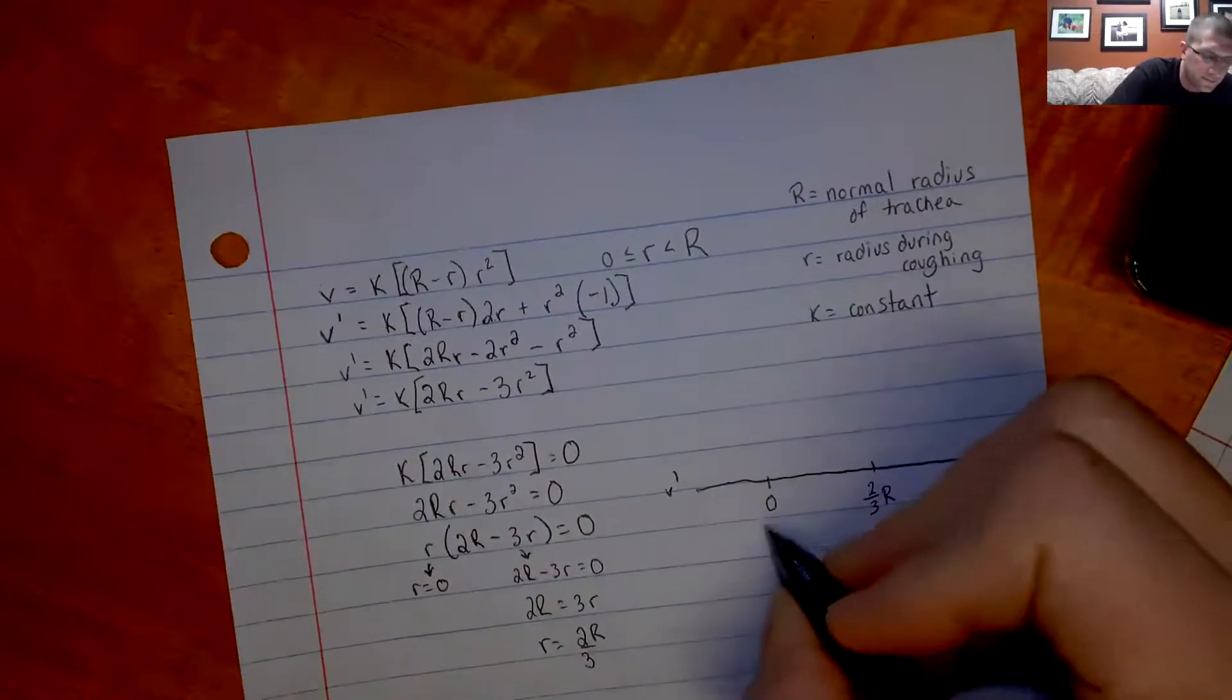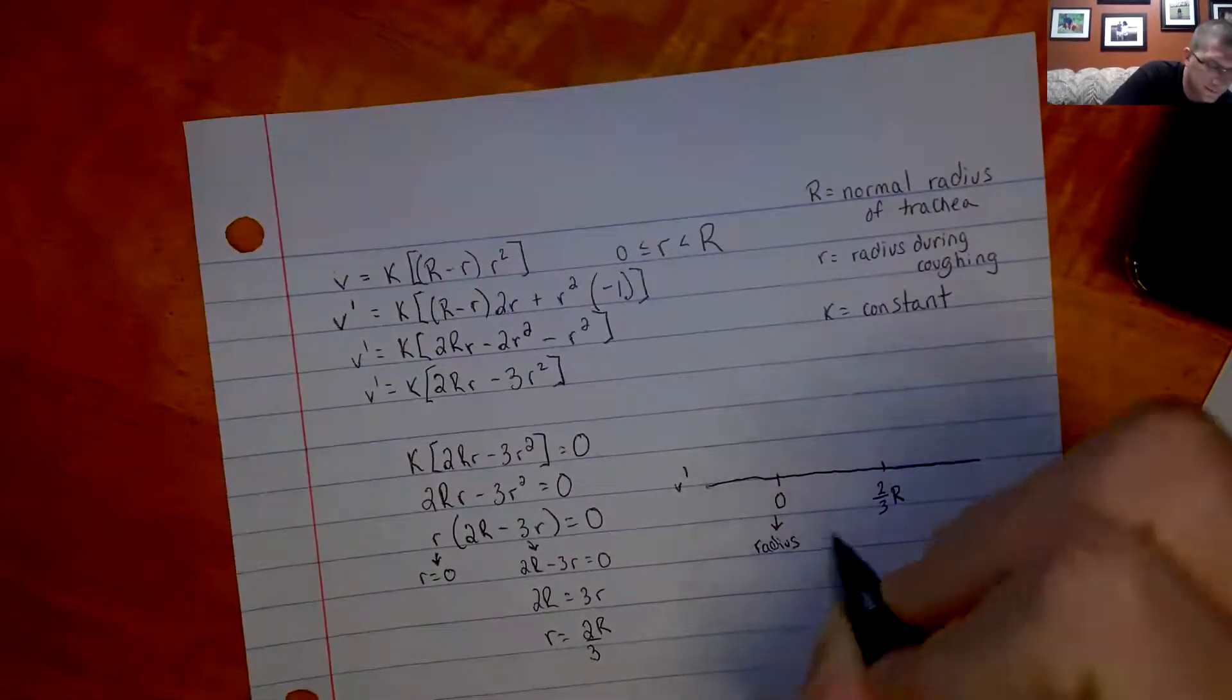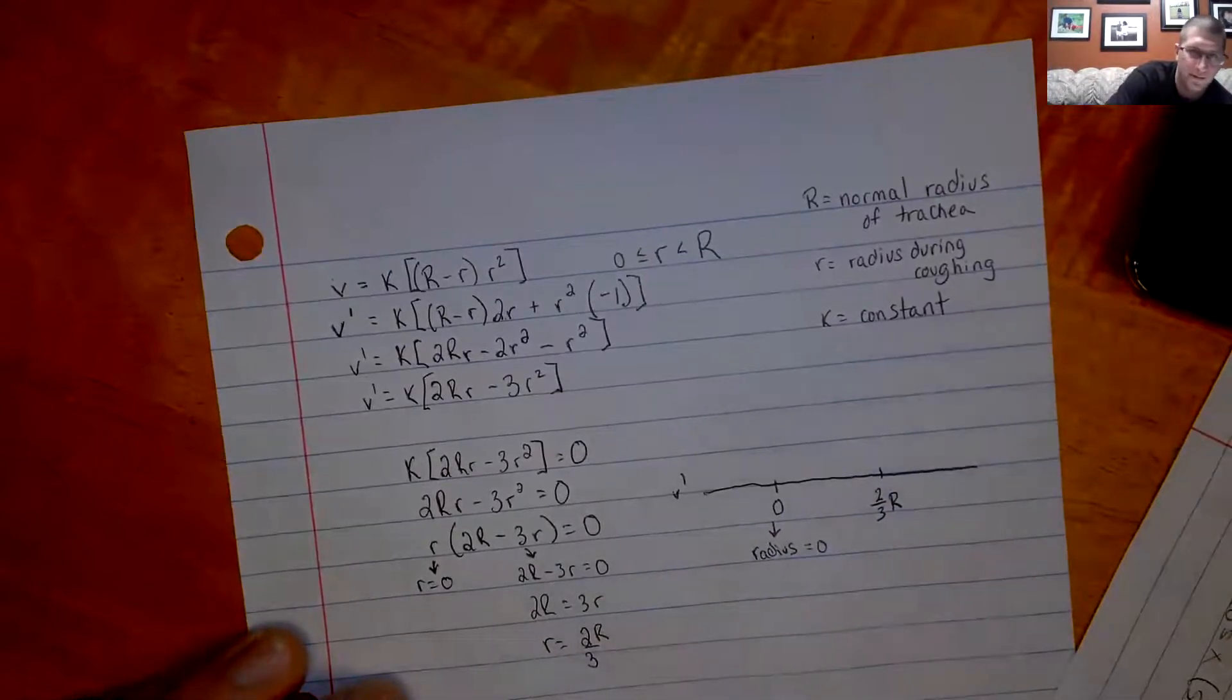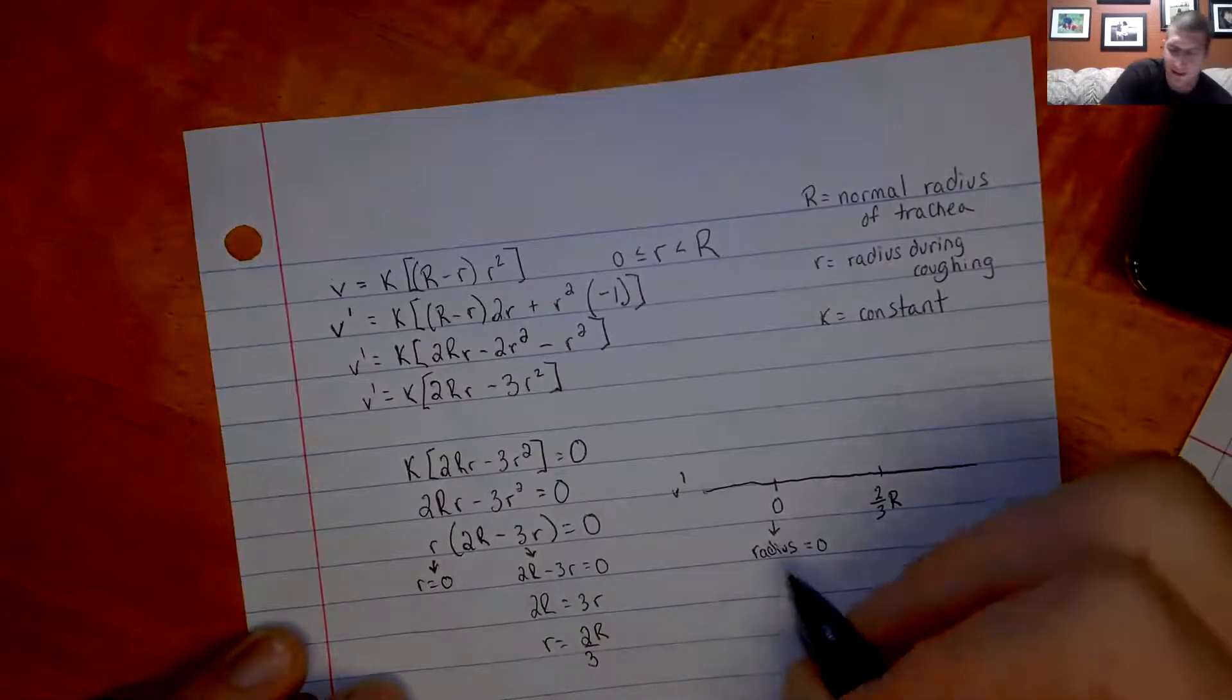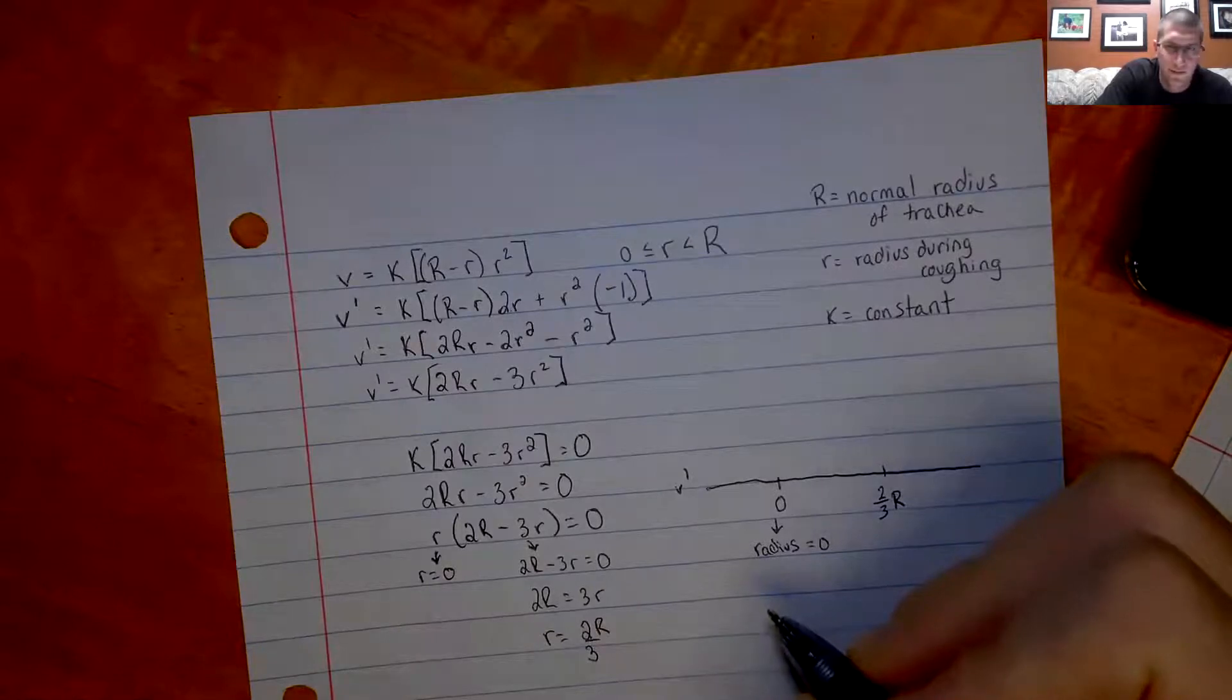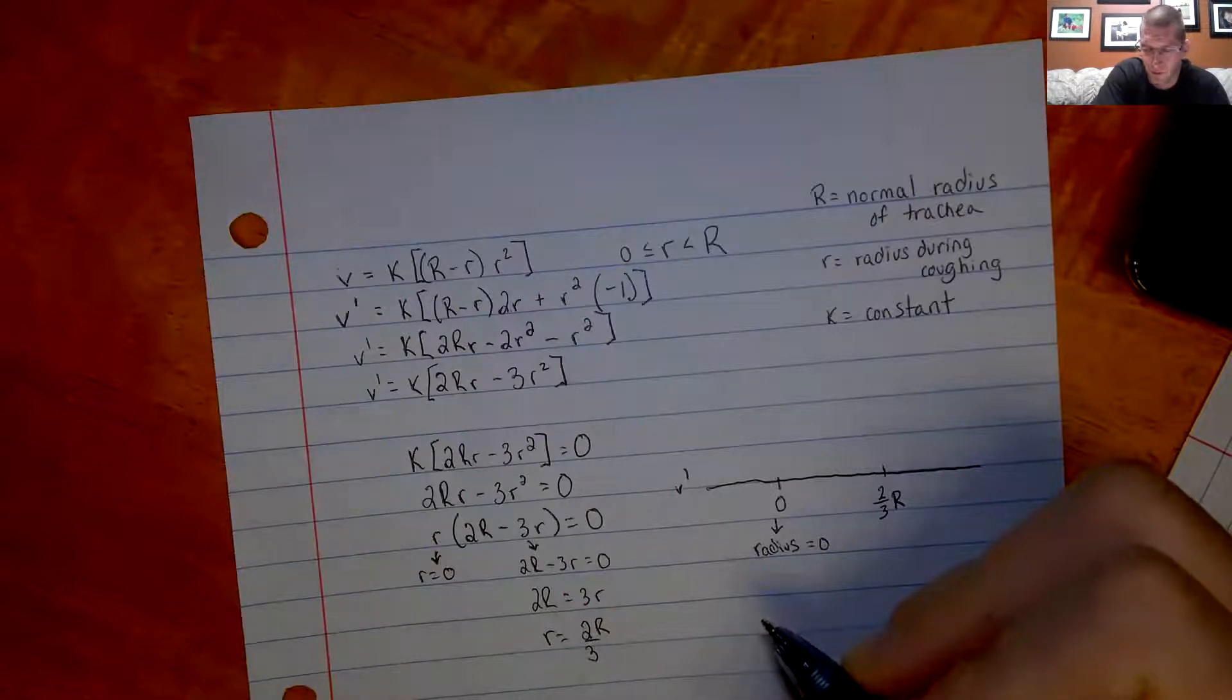So for this one, it says that the radius is 0. And if you think about the radius of 0, if the radius of your trachea is 0, it would have a max velocity with no air flowing through. If the radius is 0, there is no hole, there's no air getting through. So that can't be your maximum flow.